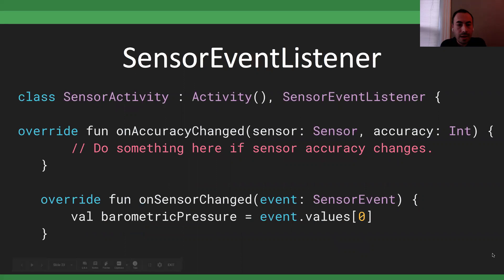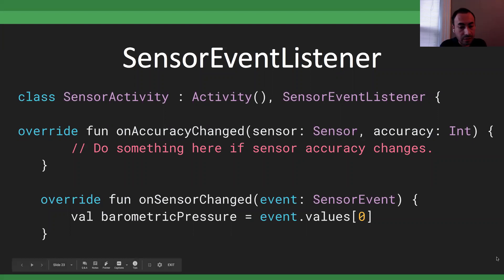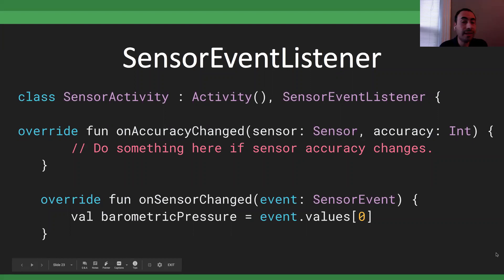The final step to getting sensor data on Android is implementing SensorEventListener in your class. Android Studio will tell you to add two required methods: onAccuracyChanged, which notifies you if sensor accuracy changes so you can handle degradation; and onSensorChanged, where you get the actual sensor data. For example: barometricPressure = event.values[0] — there's only one element for the barometer. For accelerometer, gyroscope, and magnetometer, you get x, y, z components at event.values[0], [1], and [2].